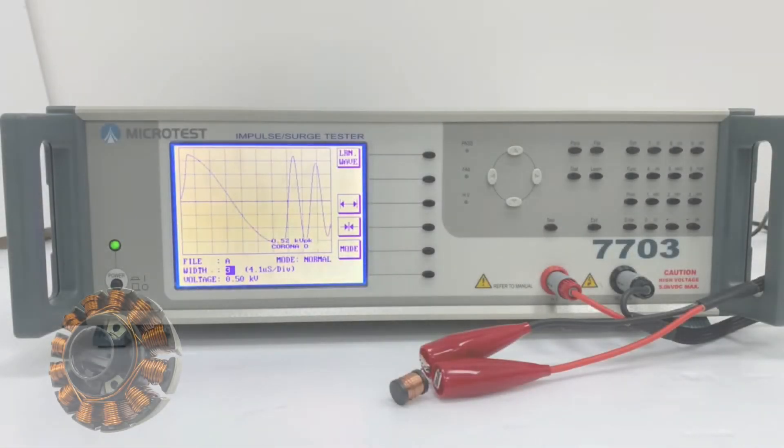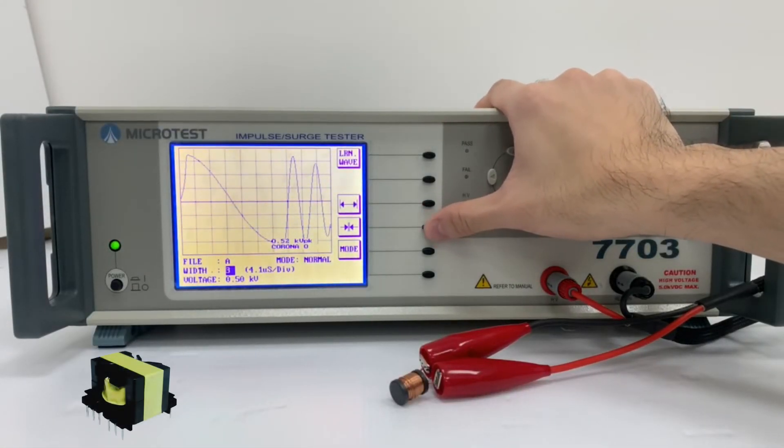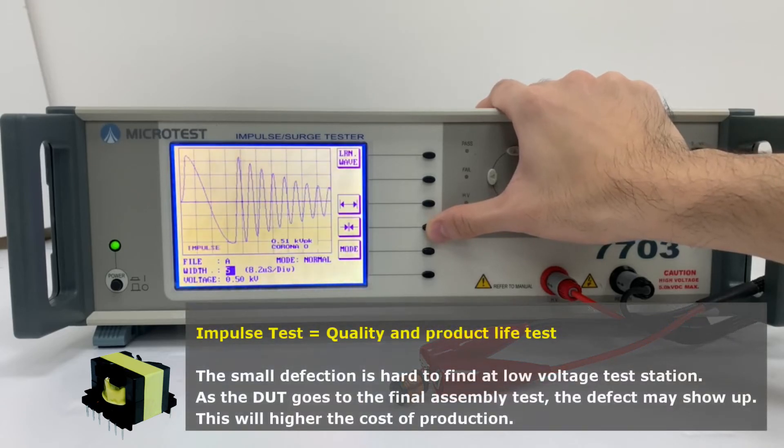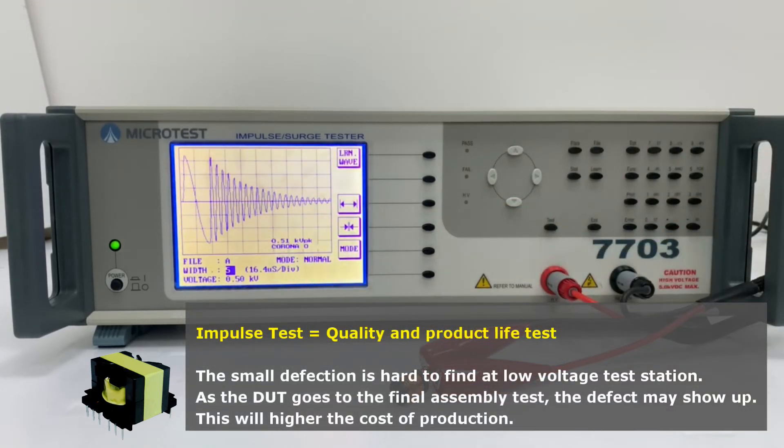Motors and transformers usually work under high voltage. If we add impulse testing in the product line, this may prevent the malfunction or burn on the motor.